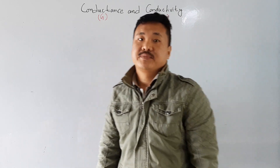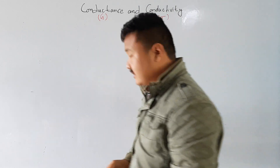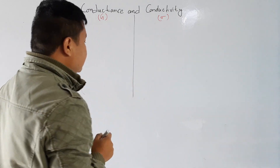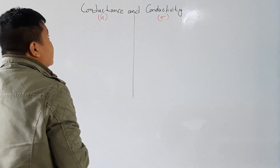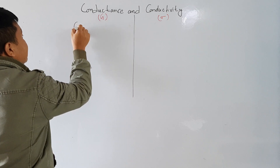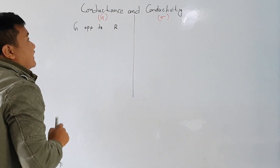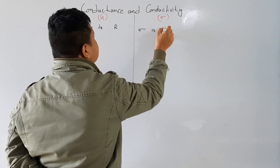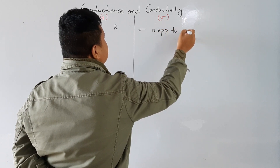Conductance and conductivity. Conductance is denoted by G and conductivity is denoted by sigma. We know that resistance and resistivity we have studied, so similarly let us go to the conductance and conductivity. Conductance G is opposite to resistance, and sigma, that is conductivity, is opposite to the resistivity rho.